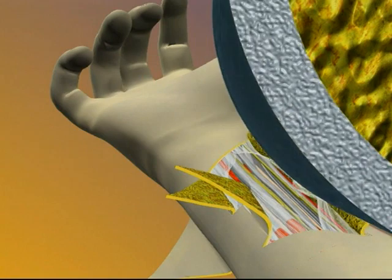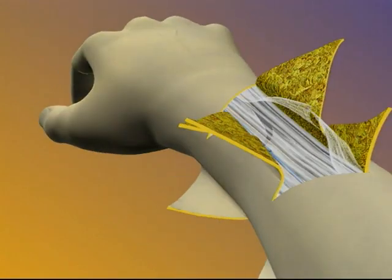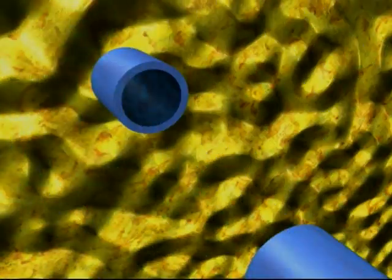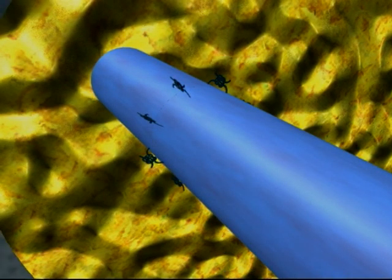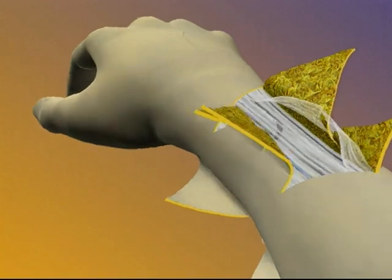Once these steps have been completed, the hand is turned 180 degrees and the veins are connected. Once the veins are connected, the use of the microscope is no longer necessary.